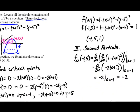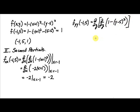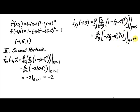Next, fyy at (−1, 5). That's the partial with respect to y of the partial with respect to y of the function, with −1 plugged in for x. Plugging in x = −1 gives 1 − 0 − (y−5)². The first partial with respect to y of that expression is negative 2(y−5). Taking the derivative again with respect to y gives us negative 2. So fyy = −2.